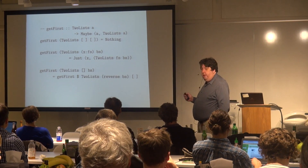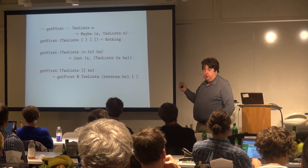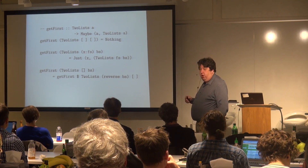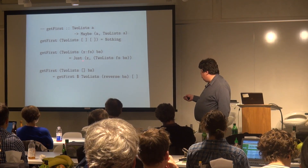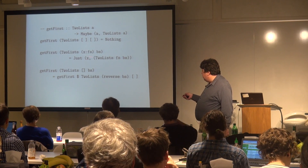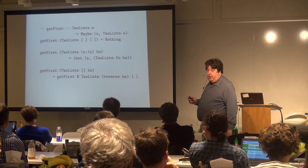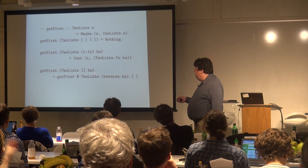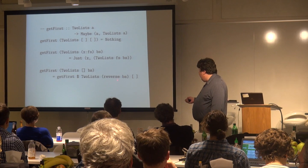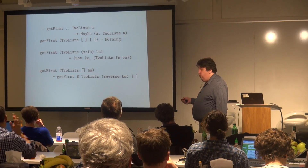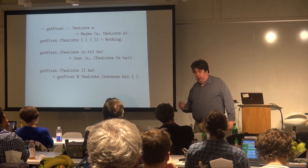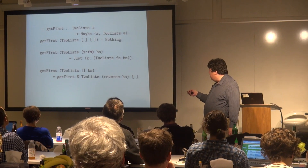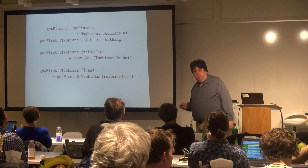To get the first: if both lists are empty, return nothing. If the front list is not empty, take the first element off it — that's the first element of the DQ — and return it along with the rest of the front list and the unchanged back list. It is possible for there to be elements in the back half but not the front half. In that case, take the back half, do a reverse, and make that the front. Then call get-first on the resulting queue, which immediately drops into the normal case.